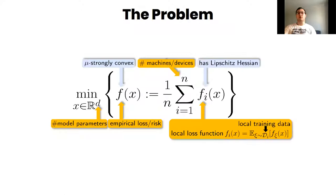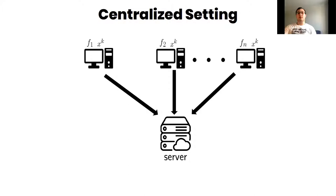We can see the centralized setting. Let's look at how, for example, Newton's method can be implemented in this setting. Each node computes local gradient and local Hessian, broadcasts them to the server, the server aggregates them and performs Newton's step.